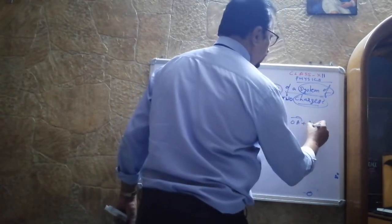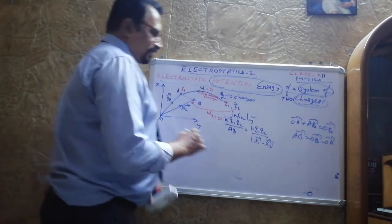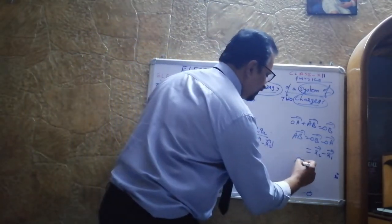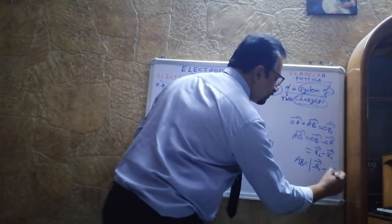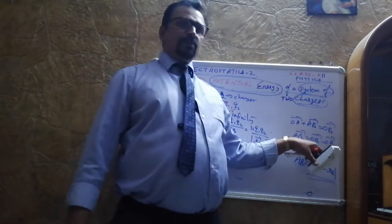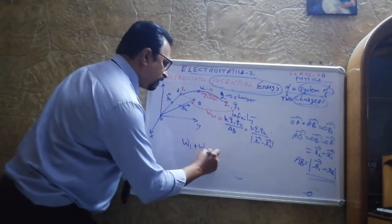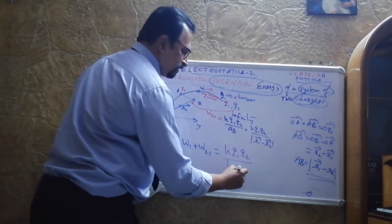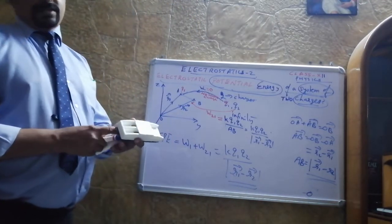Now, why is the denominator written as |r₁ − r₂|? Using the triangle law, OA + AB = OB, so vector AB = r₂ − r₁. Modulus of AB is the same as |r₁ − r₂| even though the vectors differ. So W₂₁ = kq₁q₂ / |r₁ − r₂|. Taking the sum W₁ + W₂₁, the electrostatic potential energy of the system of two charges is zero + kq₁q₂ / |r₁ − r₂|. This is the expression for potential energy of a system of two charges.